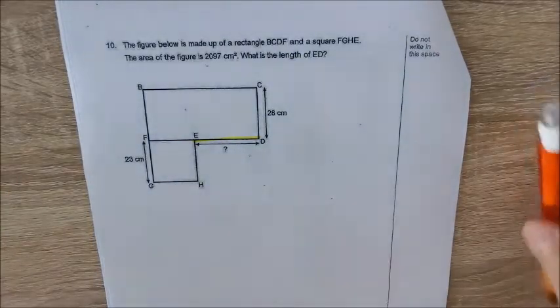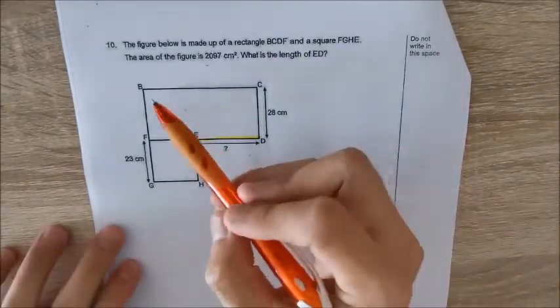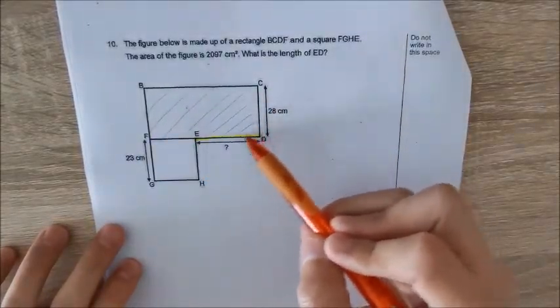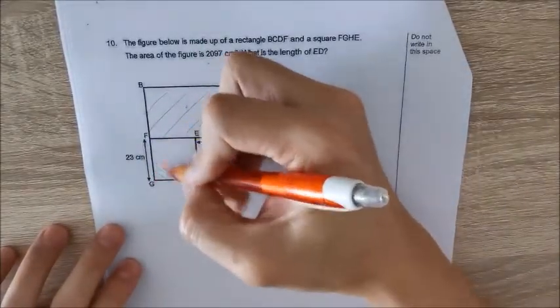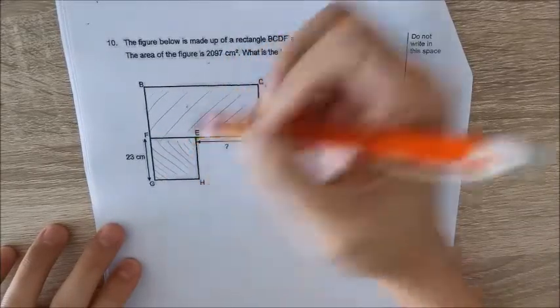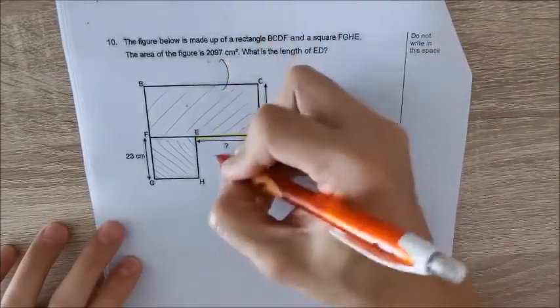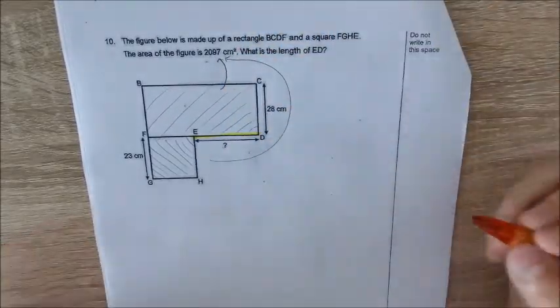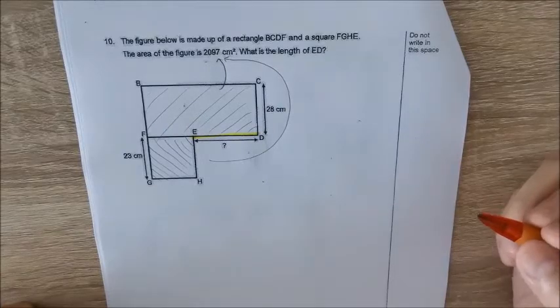Okay, so first of all, we have the total area of the rectangle and of course of the square, and both of them equals to 2097 when added together.